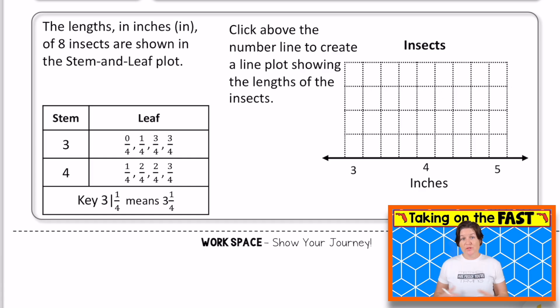And finally, we have our graphic response item display question for today. This is kind of like it could, we could go in a lot of places with these types of questions. For this one, we're actually going to be clicking above the number line. So let's go ahead and read the question. It says the lengths in inches of eight insects are shown in the stem and leaf plot. Click the number line to create a line plot showing the lengths of the insects. Now, because this is in a stem and leaf plot already, the data has already been organized for me to transfer it over onto the stem and leaf plot. So I'm going to go ahead and carefully transfer this as we go. So if I were to click, so the first one, we've got a stem of three and zero fourths. So we would have one X here. I'd click that.